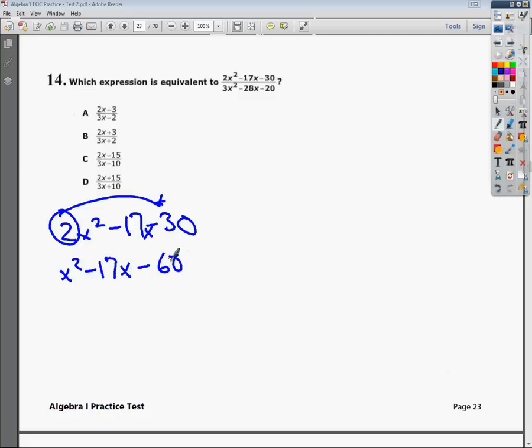Then I need to do a factor list for 60, so I do 1 and 60, 2 and 30, 3 and 20, and it appears that 3 and 20 will give me 17.